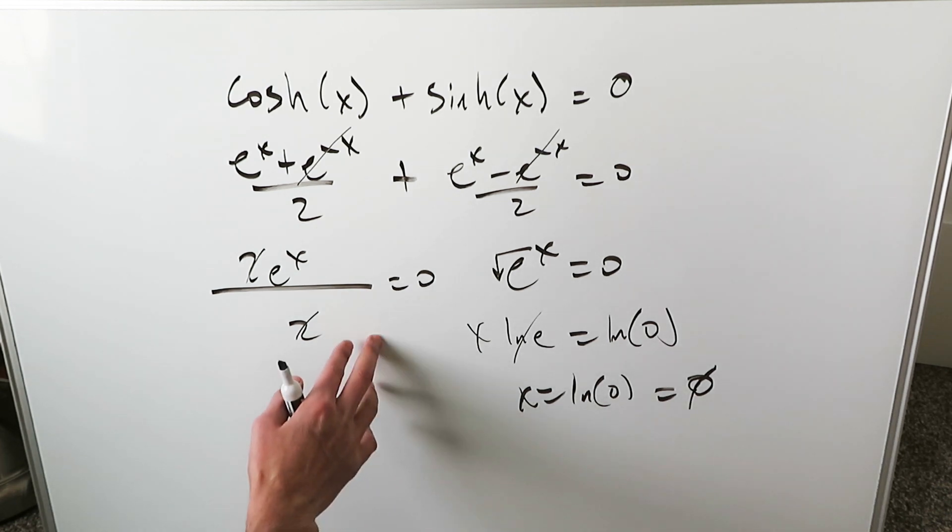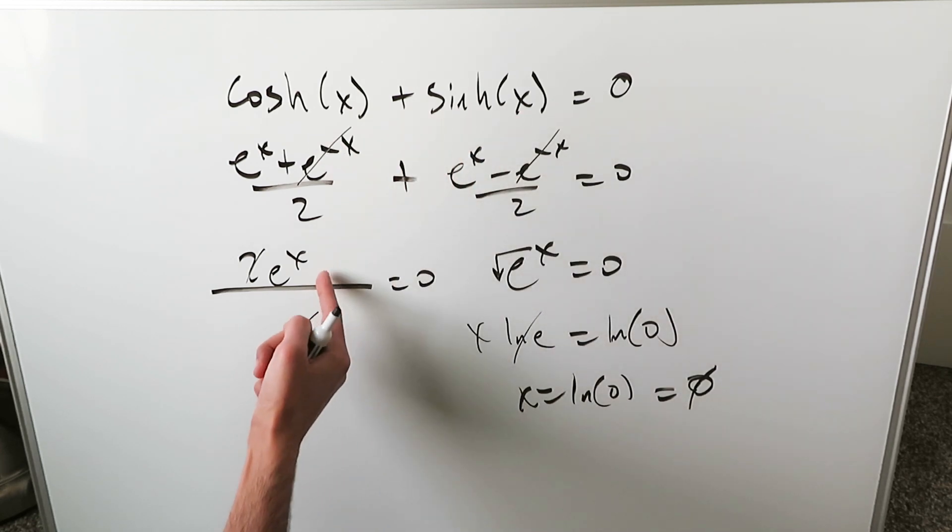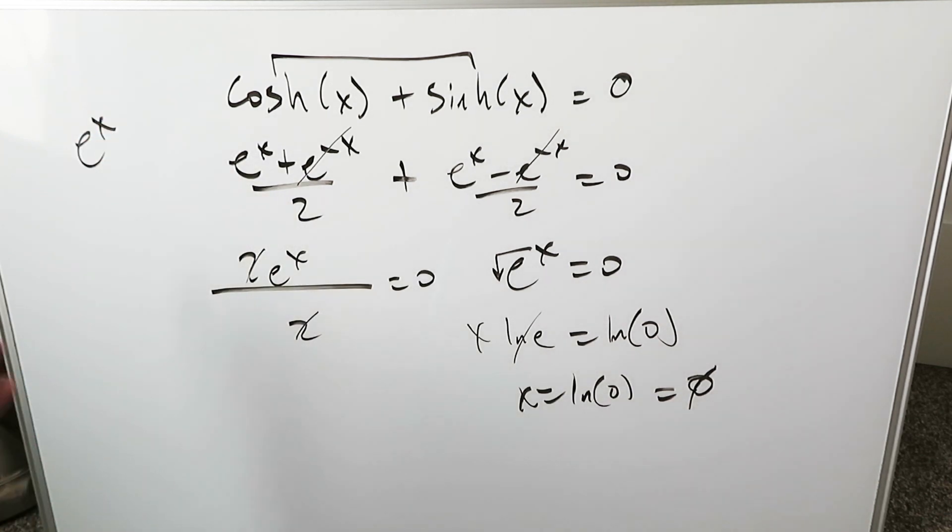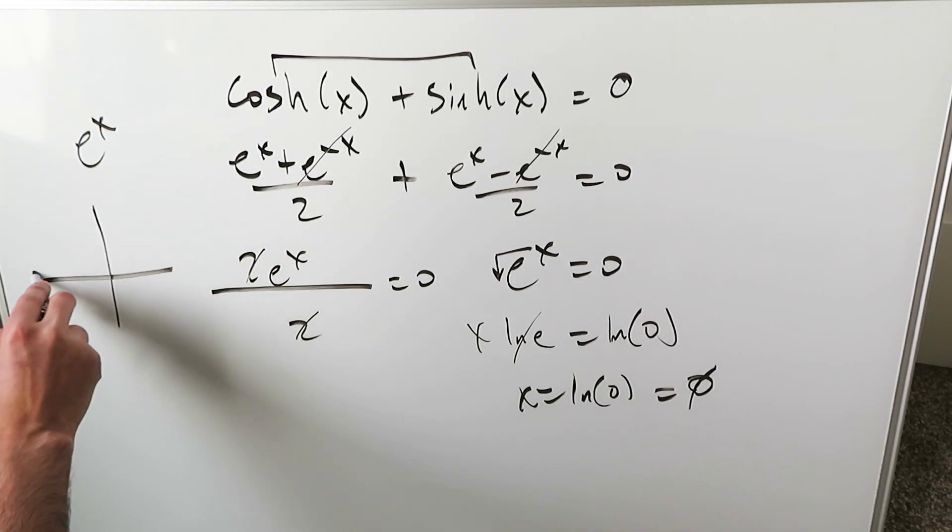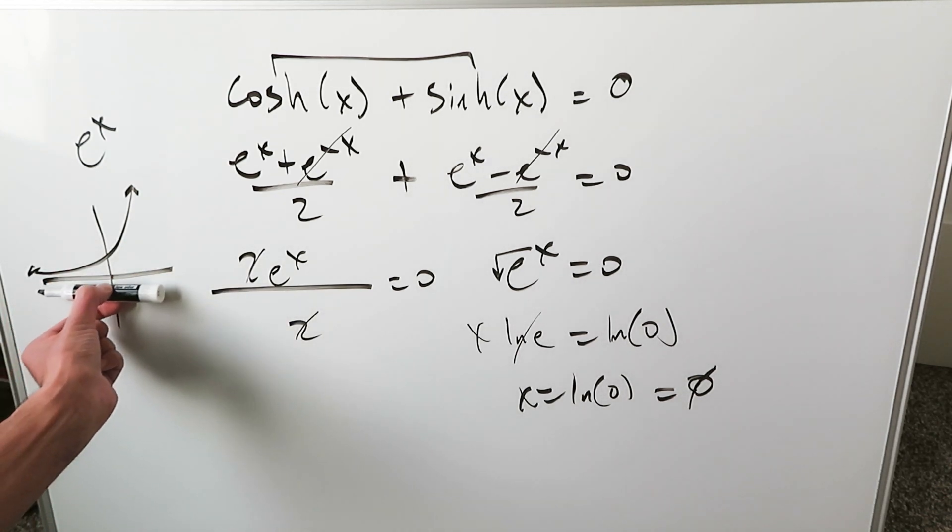One of the reasons why you can show that graphically is right here. This in its totality simplified to e to the x. When you're looking at this part, you're looking at e to the x. When you look at it graphically, what do you have? But what stands out in this graph? There's a horizontal asymptote right here, y equals 0.